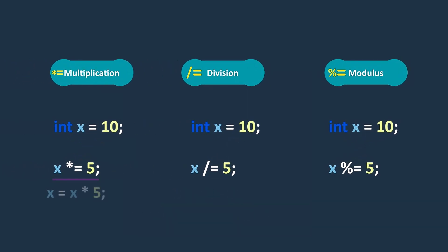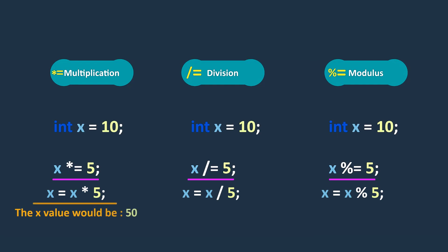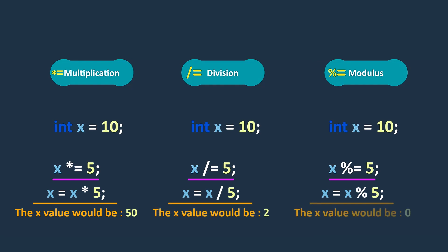Similarly, the multiplication, division, and modulus assignment operators work the same way. In the multiplication example, the value of x would be 50. In the division example, the value of x would be 2. And in the modulus example, the value of x would be 0.